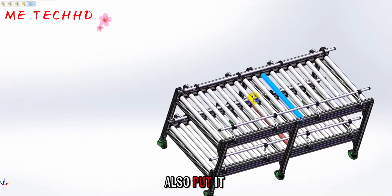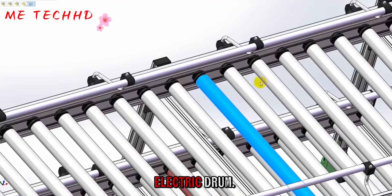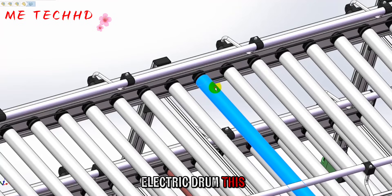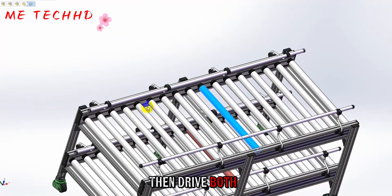And the motor here, we also put it in the middle. This is an electric drum. Then drive both sides and run it with the belt. Usually for small and medium-sized loads.